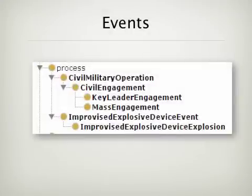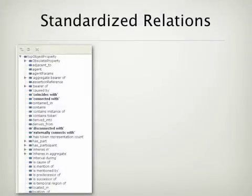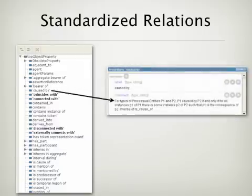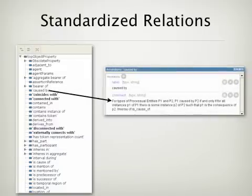The Basic Formal Ontology facilitates the categorization of occurrences, which can be decomposed down to the required level of granularity. The use of standardized relations allows for inferencing between ontologies. Each relation is defined in the Basic Formal Ontology, as shown here.